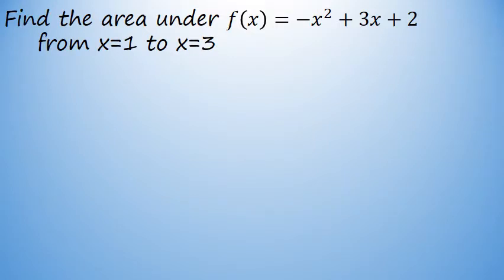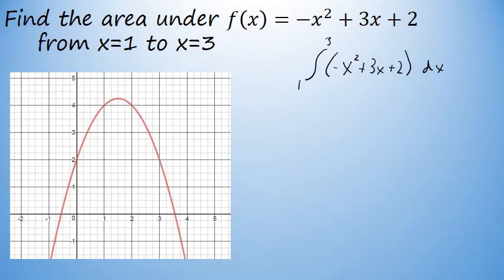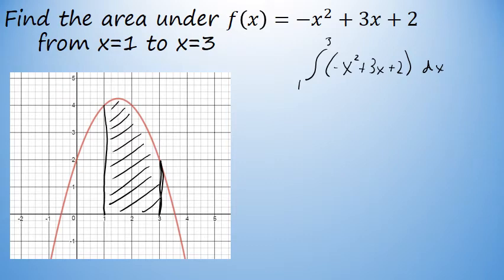At this point, let's evaluate the integral that we previously set up and find the exact area between the curve and the x-axis, from x equals 1 to x equals 3, of negative x squared plus 3x plus 2. Again, visually, we're finding the area of this shaded region between f of x and the x-axis.